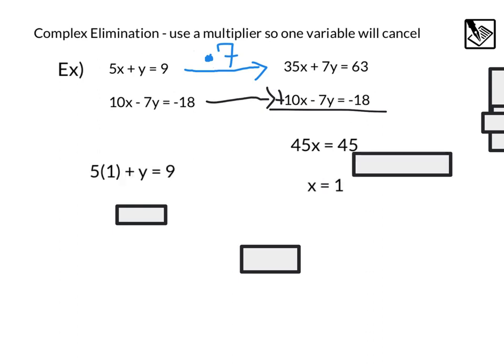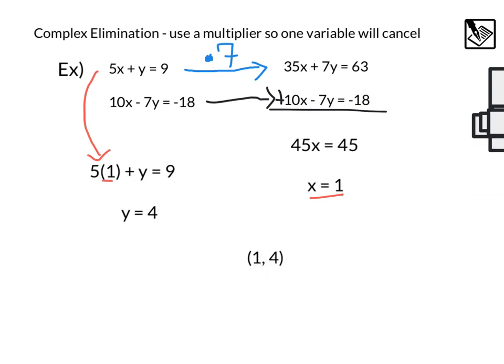And now what we can do is actually plug that 1 into any equation. I'm going to reuse this equation right here on top because that one looks easy. Substituting in that x equals 1. So we'll have 5 times 1 plus y equals 9. Solving for that, we'll get y equals 4. And our final solution, the point 1 comma 4.